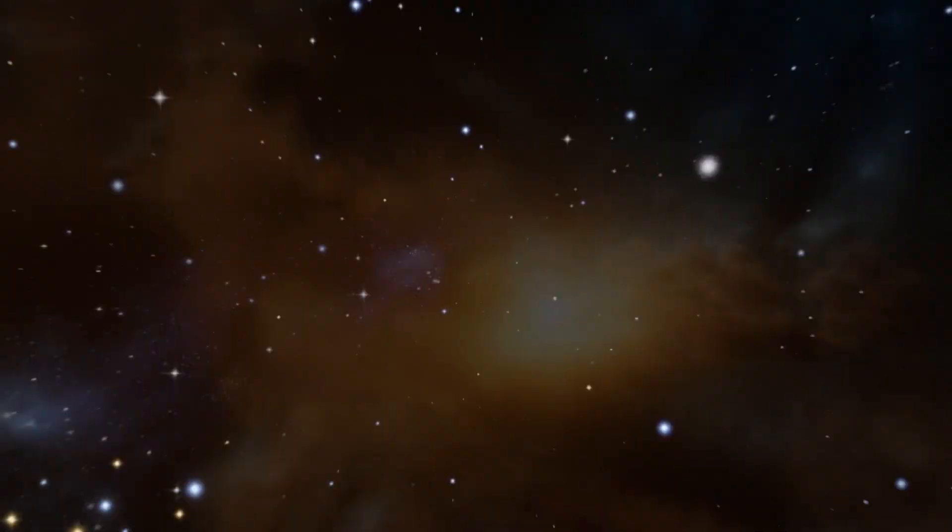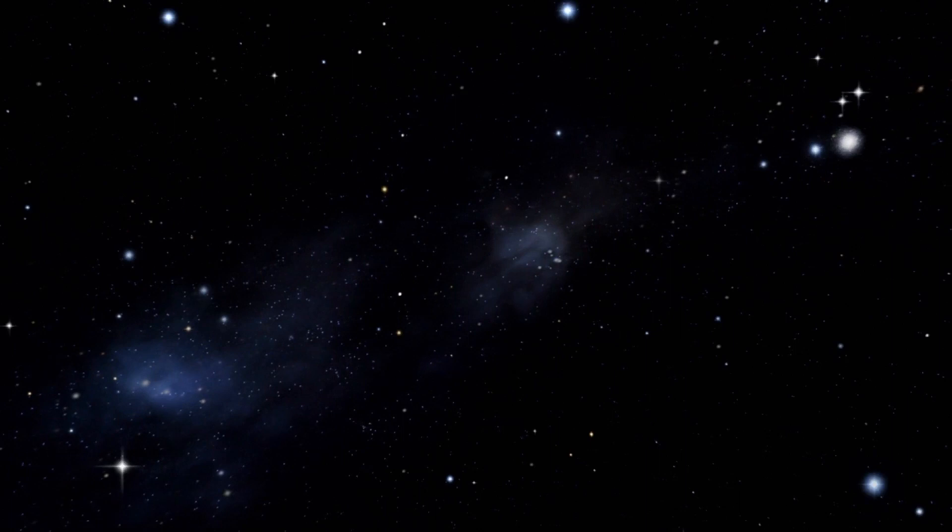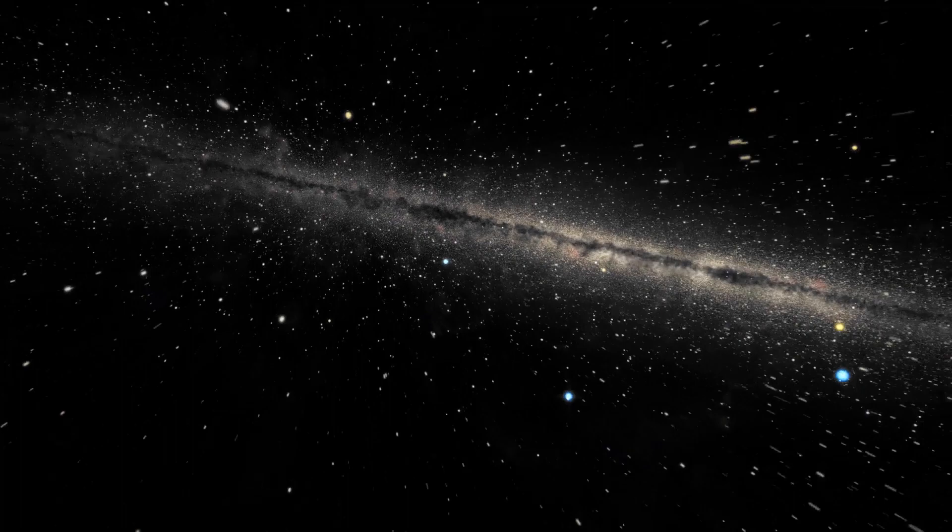Over time, the slightly hotter areas pulled in more and more material, and the slightly colder areas grew colder and emptier. Today, hot, dense stars and galaxies are surrounded by cold, mostly empty space.